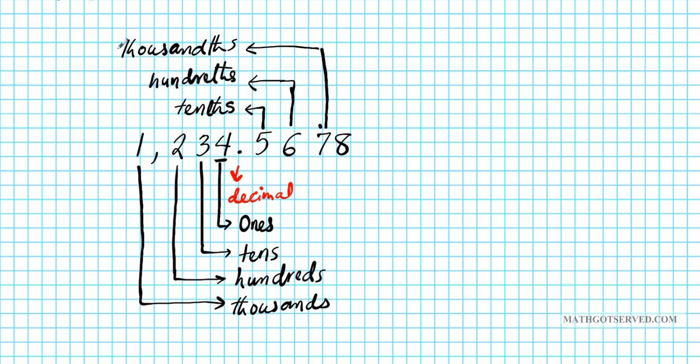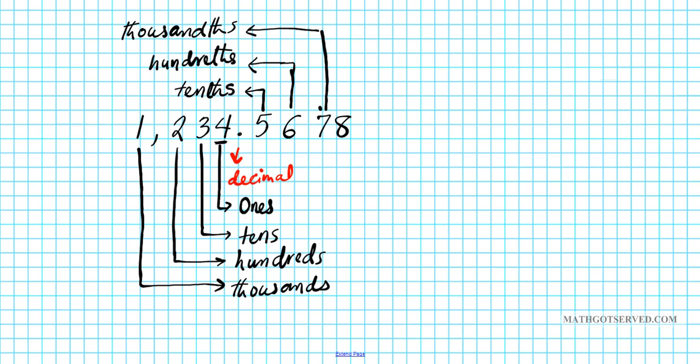So just remember when you're doing your place value, always start from ones and that's how you name your place values. All right, so let's take a look at some examples on adding and subtracting whole numbers and decimals. So let's take a look at the first one, number 1.